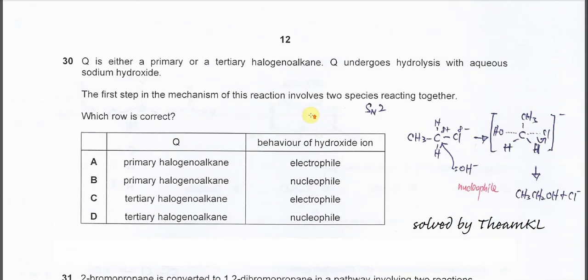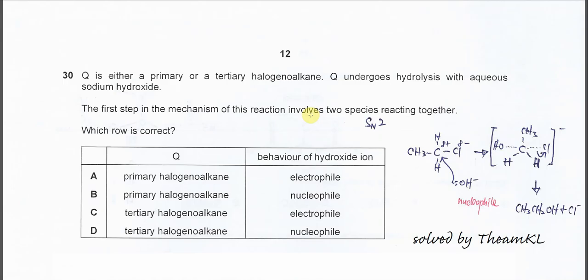Question 30. For this one, Q is either a primary or tertiary haloalkane, and Q undergoes hydrolysis with aqueous sodium hydroxide. The first step in the mechanism of this reaction involves two species. This is very important information because when they say involves two species, this must be Sn2.